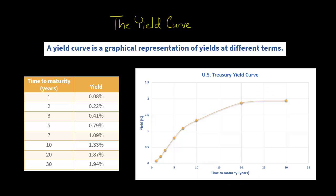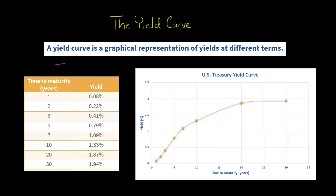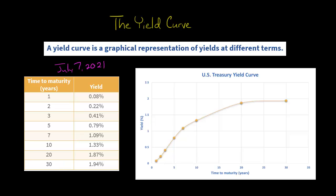Here's data that I got for July 7th, 2021. This is actual data for U.S. Treasuries based on different times to maturity — so a one-year Treasury bill, a 10-year Treasury note, a 30-year U.S. government bond.